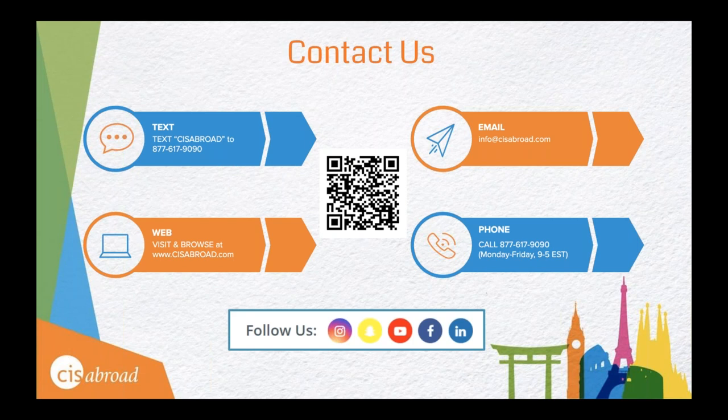If you've made it this far, congratulations — you're one step closer to finding the best program for you. You can text CIS Abroad to 877-617-9090, and a real advisor — not a robot — will be available to answer any questions you have. You can also email us at info@cisabroad.com or simply give us a call.